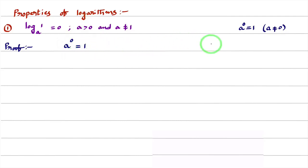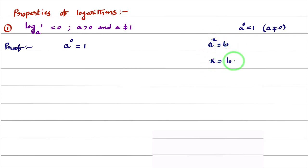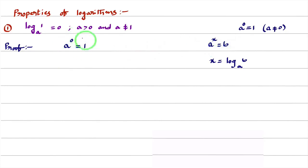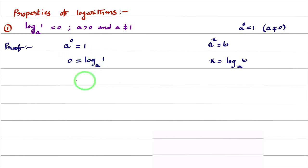From the definition of logarithm, we learned that whenever you see an expression of the form A power X equal to B, then X can be written as log B base A. So here, you compare A power 0 equal to 1 with the form A power X equal to B. Writing it in logarithm form, 0 is called the logarithm of 1 to the base A — simply written as 0 equal to log 1 base A. We have proved the result.